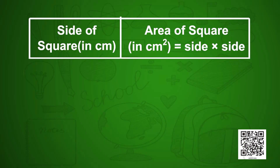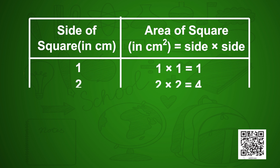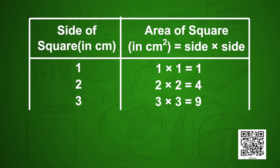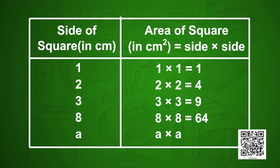If you observe the table: if the side of a square is 1 centimeter, the area is 1 multiplied with 1, which is 1 centimeter square. Similarly, if the side is 2 centimeters, the area will be 4 centimeter square. If the side is 3 centimeters, we have area 9 centimeter square. In general, if the side is a centimeters, its area will be a multiplied with itself, that is a square.